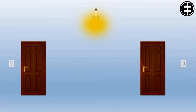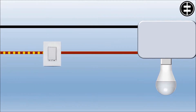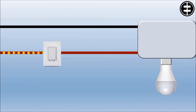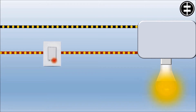Two-way switching can also be used when more than one entrance and exit are available in the same room. Normally, the bulb lights up when electrical current passes through it, and the main function of any switch is to control the current flow — controlling when the bulb will be on and when it will be off.